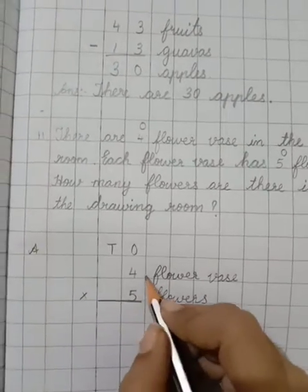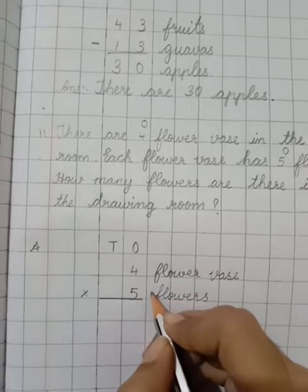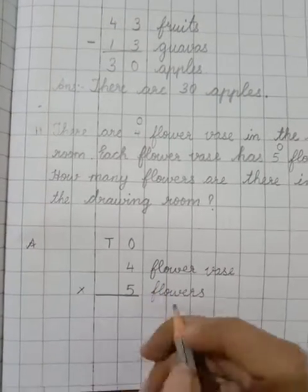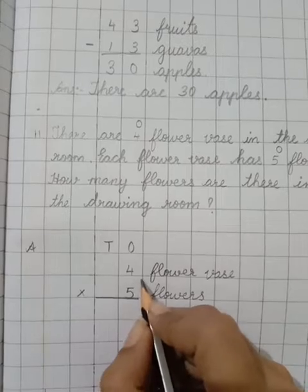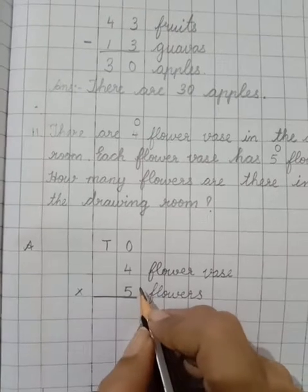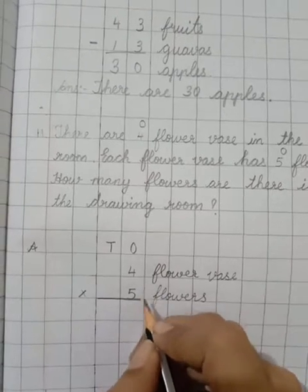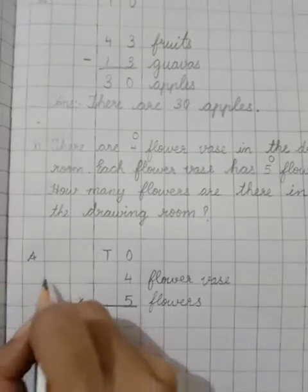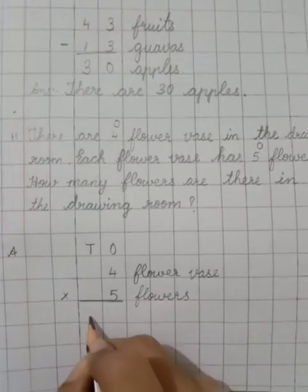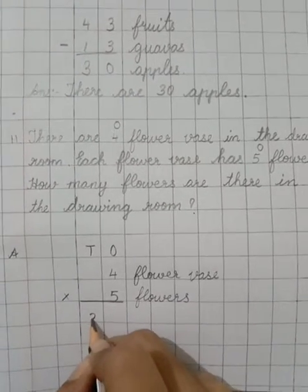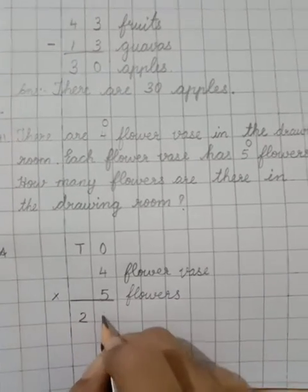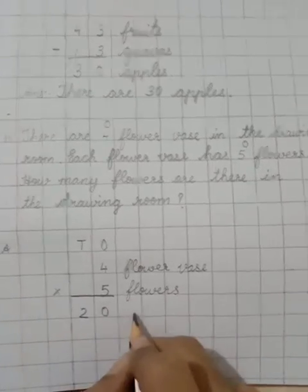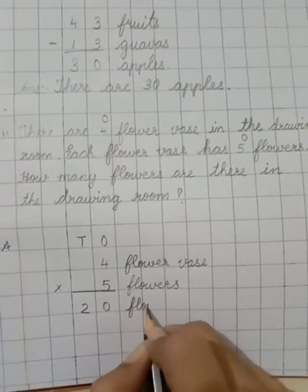So now four fives are how many? Four ones are four, four twos are eight, four threes are twelve, four fours are sixteen, four fives are twenty. So twenty — how we will write? Two in tens column and zero in ones column. So twenty flowers.